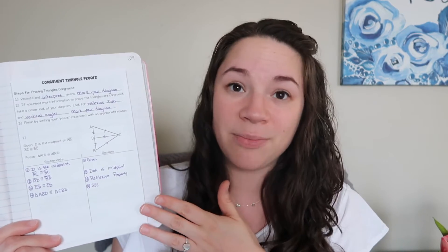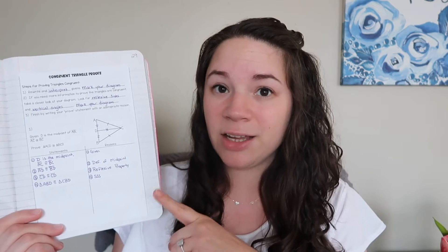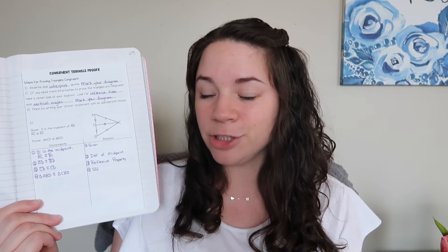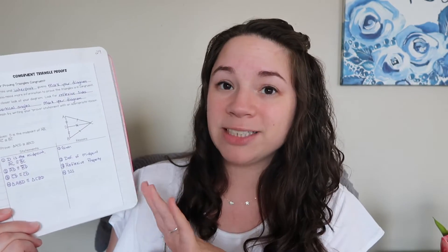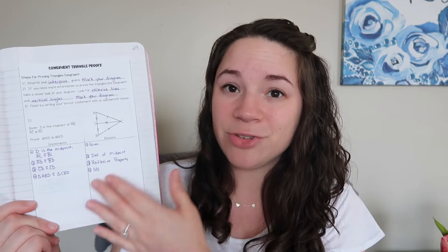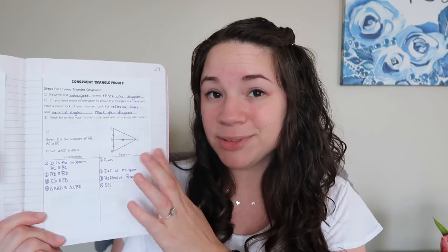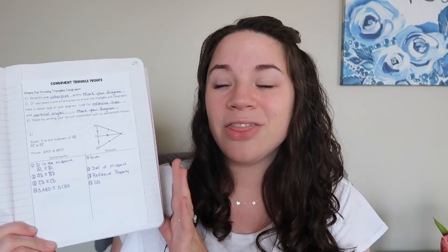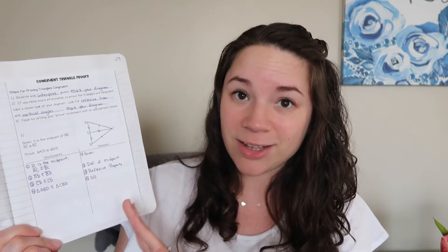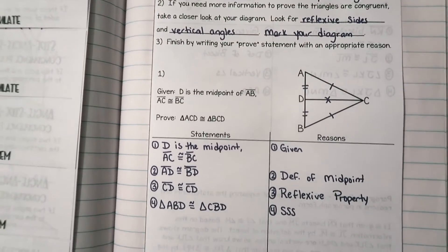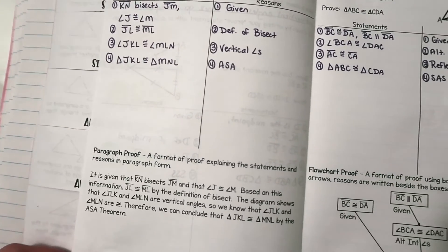Then we did congruent triangle proofs. I have brief notes because students have seen proofs before — this is the third time. We did algebraic proofs at the start of the year, then line and angle proofs, and now they're seeing it again, so I don't need to re-explain two-column proofs. I still remind them to number both sides, emphasize marking diagrams, and walk them through the process: start with the given, interpret it, mark your diagram, then look for reflexive sides, vertical angles, and finally prove the triangles congruent.